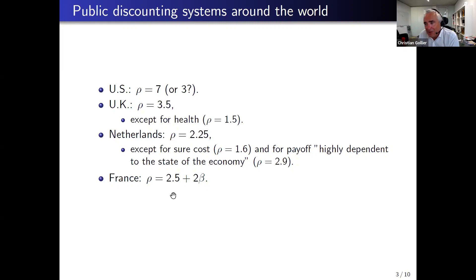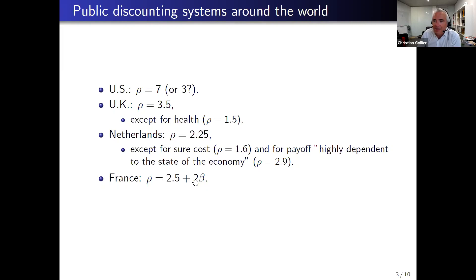Here is one of my contributions: I convinced, over the last ten years, that in France we use the normative approach of a risk-adjusted discount rate. If beta is the income elasticity of the benefits of the project, the discount rate that should be used is 2.5% plus 2% times beta. So risk-free projects should be discounted at 2.5%, and risky projects with a beta of one should be discounted at 4.5%.